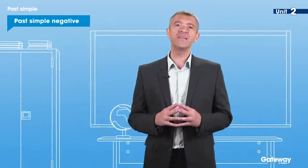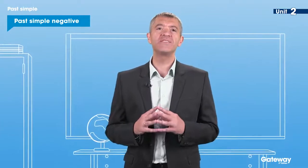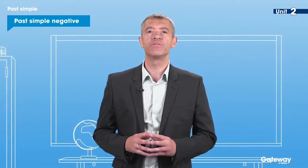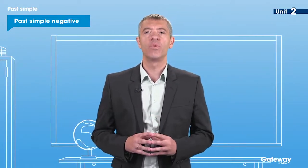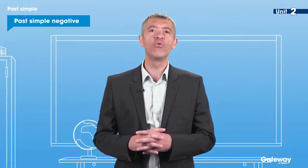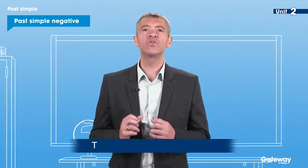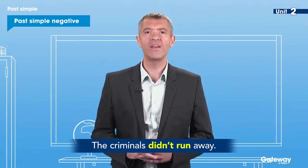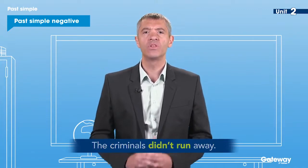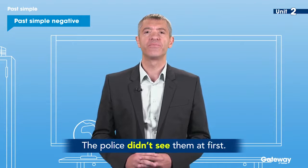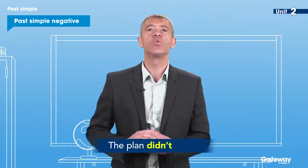The negative form is similar for regular and irregular verbs. We add didn't before the verb. So we say: the criminals didn't run away; the police didn't see them at first; the plan didn't work.